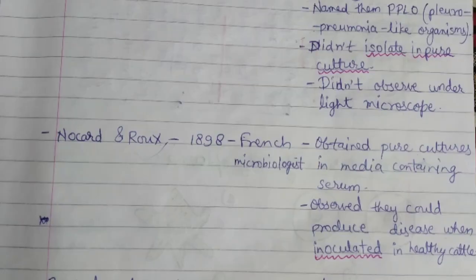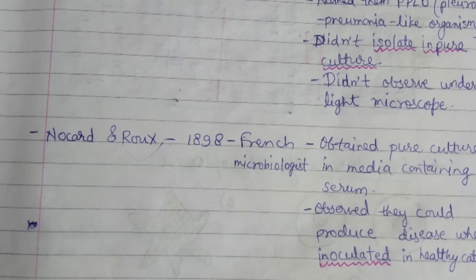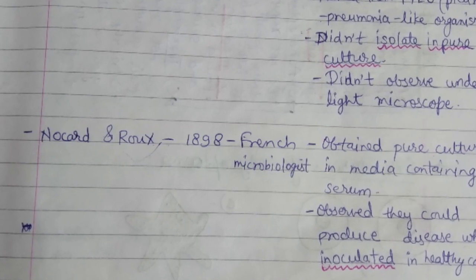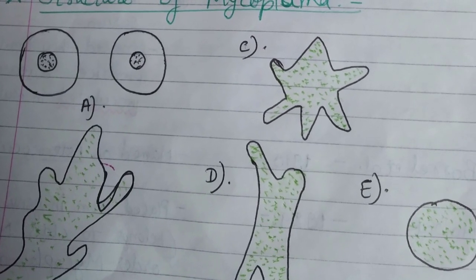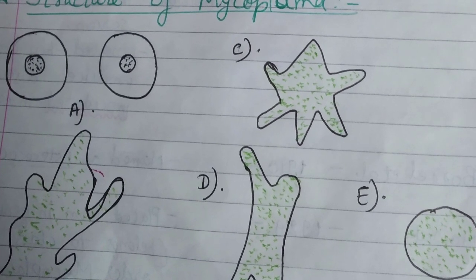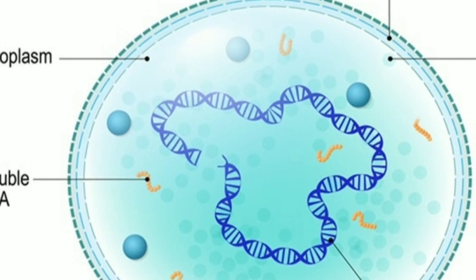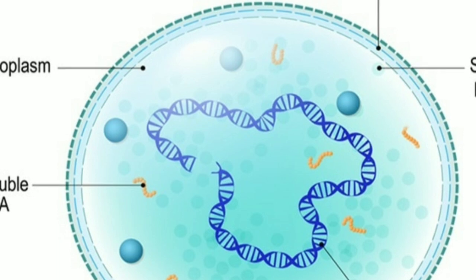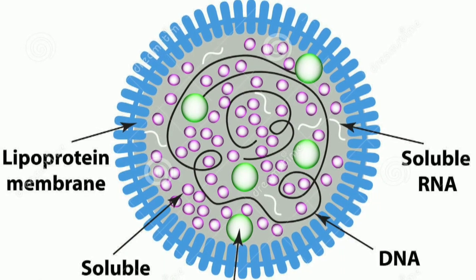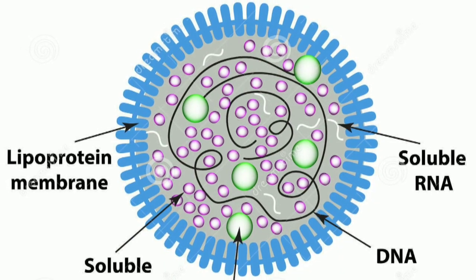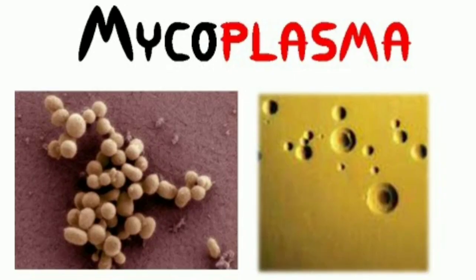Mycoplasmas are frequent contaminants in tissue culture and are rich in organic matter. They have also been found in hot water springs and other thermal environments. They may occur in soil, sewage water, different substrates, and in humans, animals, and plant bodies. They are defined as prokaryotes without a cell wall and are highly pleomorphic. Most are aerobes and facultative anaerobes, and they are known to cause diseases in animals and plants.